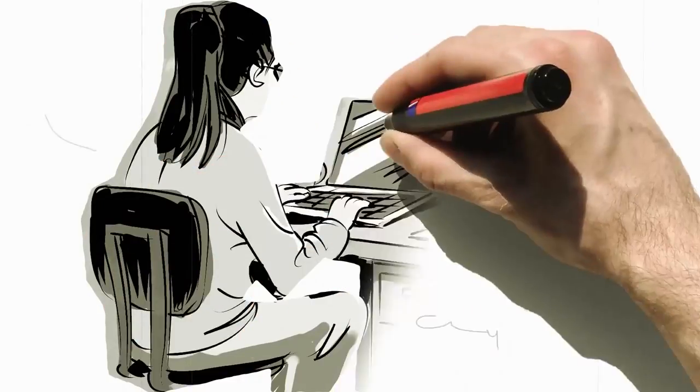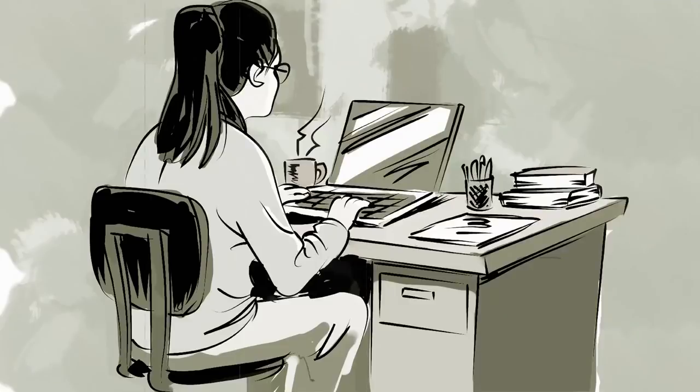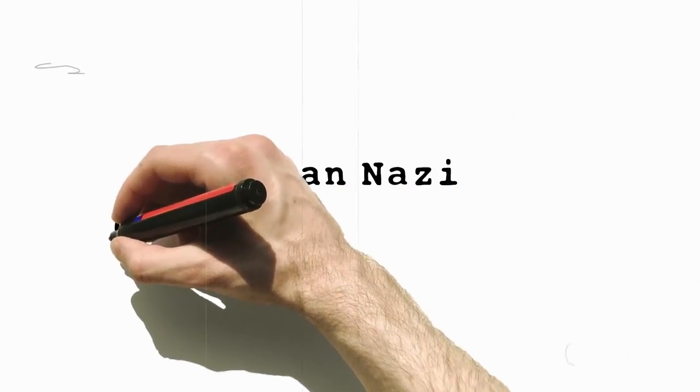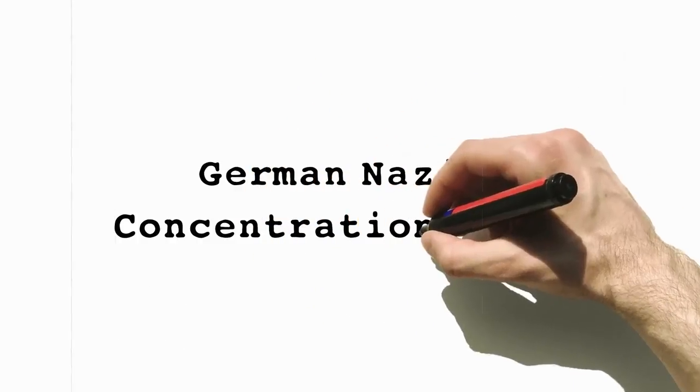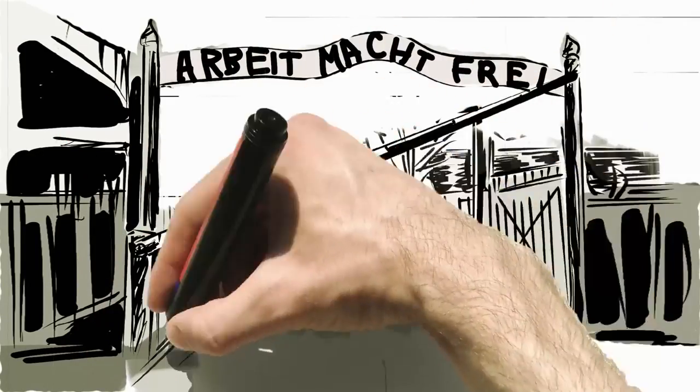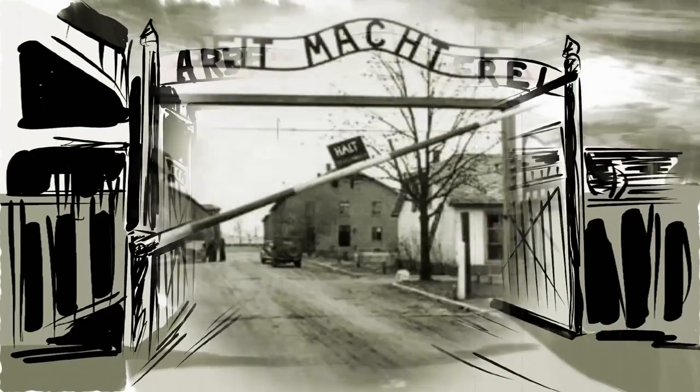Today, journalists often inaccurately refer to these camps as Polish camps or camps in Poland when referring to German Nazi concentration and extermination camps. This is wrong. There were no Polish camps. These camps were established and operated by Nazi Germany in occupied Poland.